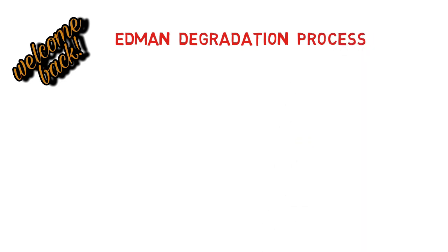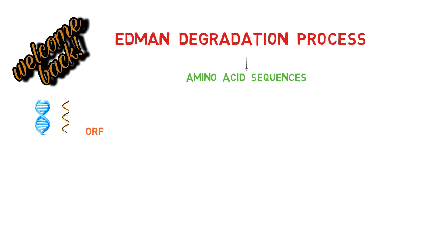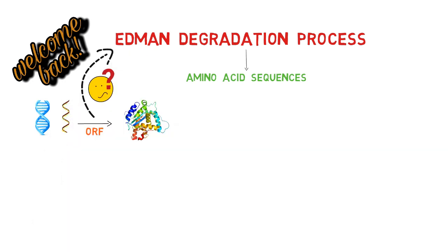Welcome back. In today's video, I will discuss the Edman Degradation Method. It is used to find out the sequence of amino acids in the polypeptide chain of proteins. Given the DNA or RNA sequence, ORFs can be extracted and protein sequences can be determined. But there are chances that proteins may be unknown, which is why we use the Edman Degradation Method in protein sequencing.